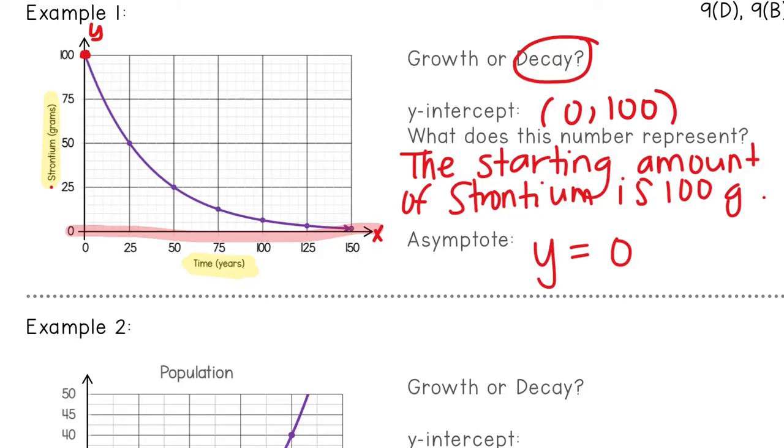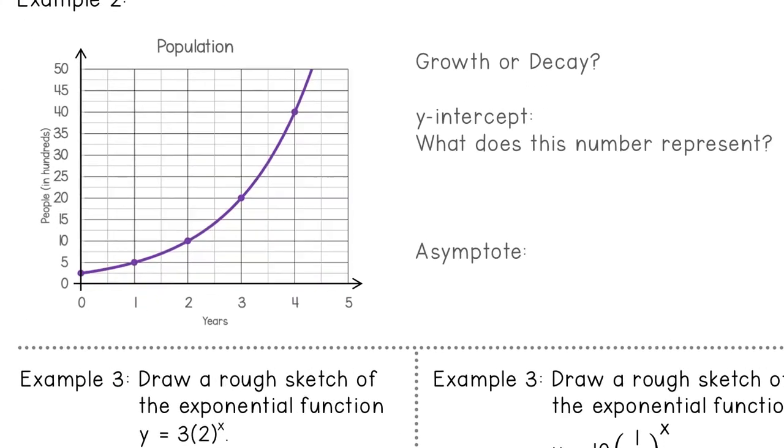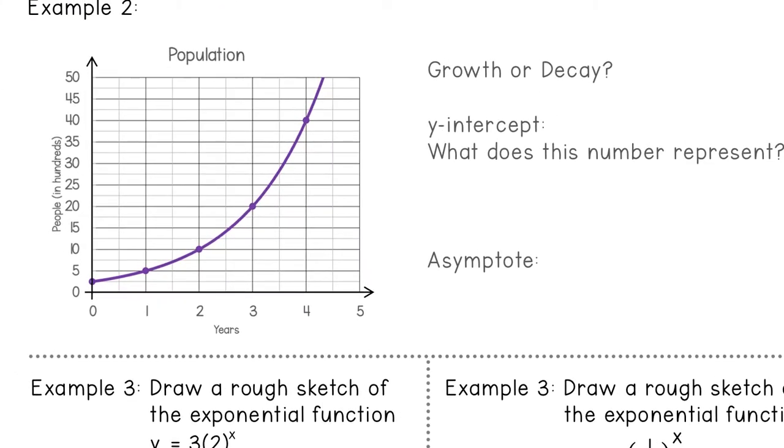Let's look at a second example. When I read this graph from left to right, the curve is going up, which means that this is an example of exponential growth.